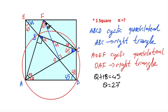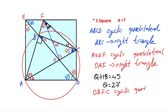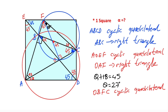So theta must be equal to 27 degrees. Notice that opposite 45 degrees have the same length again, therefore we have one more cyclic quadrilateral. So OBFC is a cyclic quadrilateral. Notice that opposite of alpha and theta have the same arc, therefore alpha must be equal to theta, which is 27 degrees.